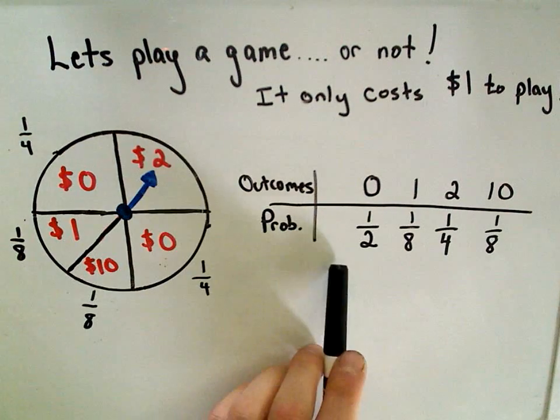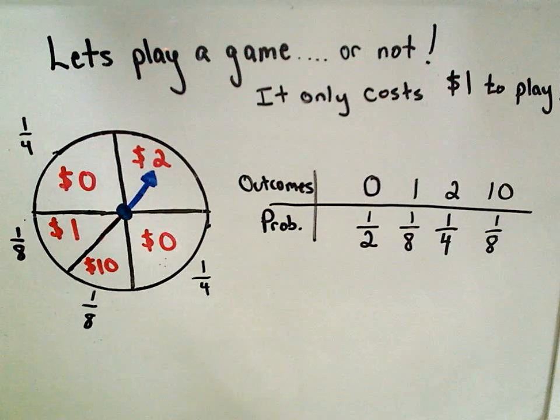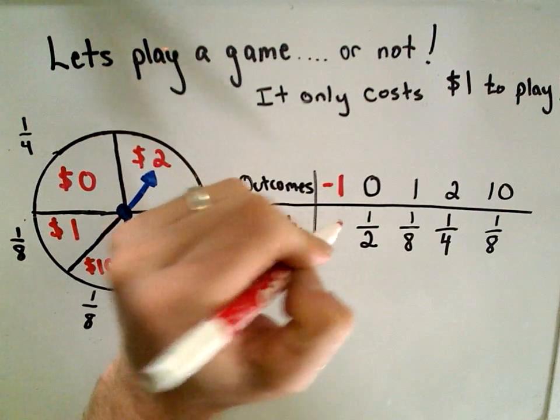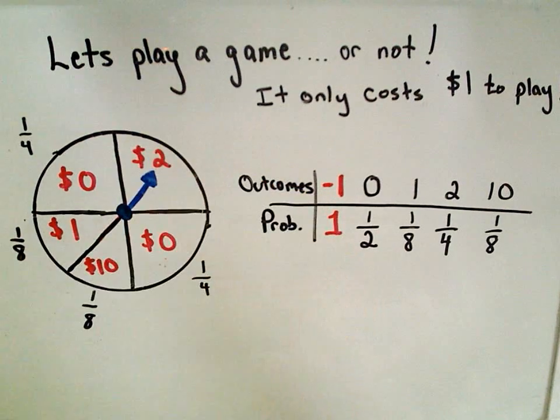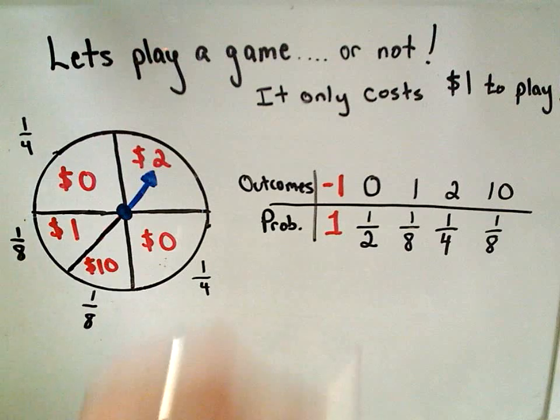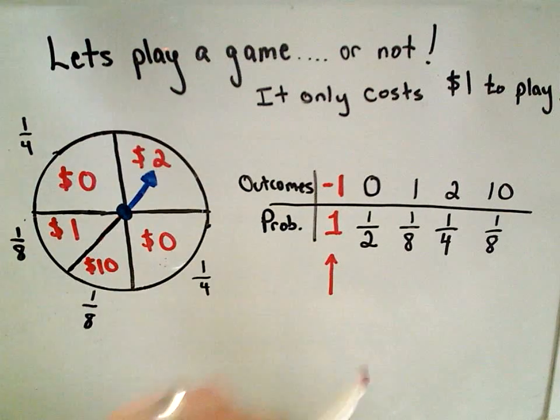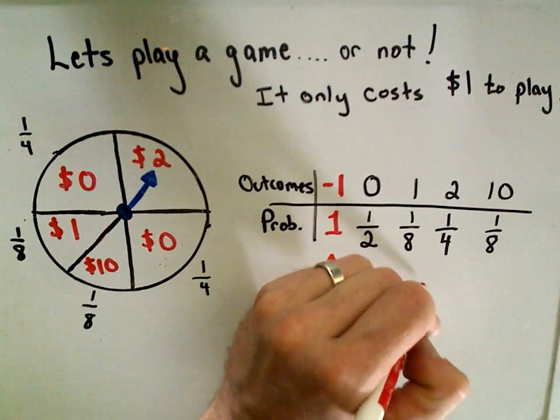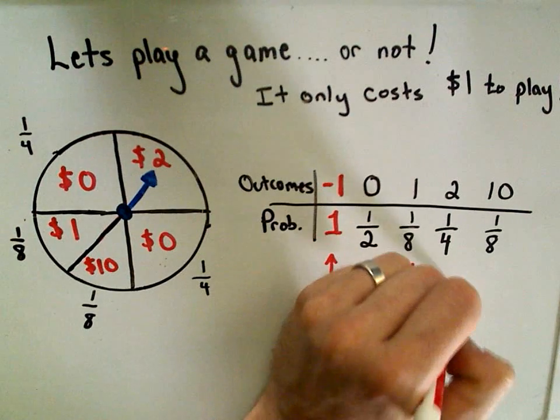Okay, so notice I left a little space here at the beginning. One of the outcomes, for sure, is that you're going to lose $1 with a probability of one. And basically what this represents, this just factors into the fact that it costs $1 to play the game.